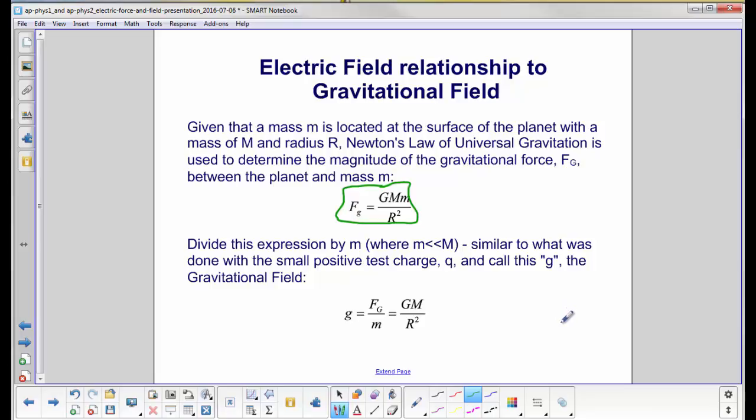Divide this expression by little m, and again, there's our analogy to the positive test charge, and we will call this g, the gravitational field: big G, M divided by R squared.